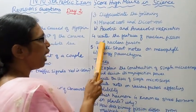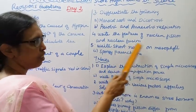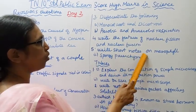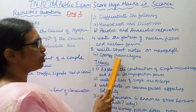Fourth: Write the features of nuclear fission and nuclear fusion. Fifth: Write short notes on (a) mesophyll and (b) spongy parenchyma.